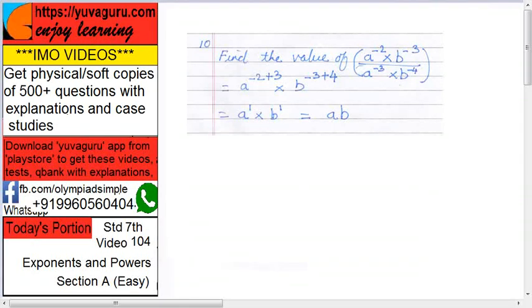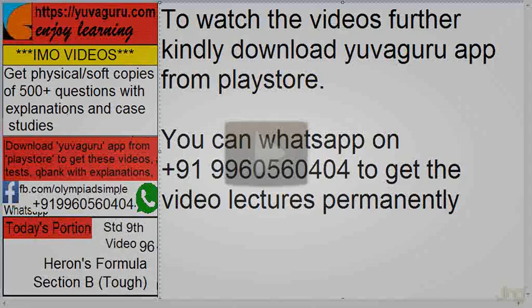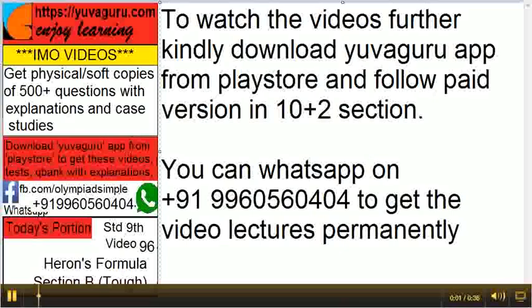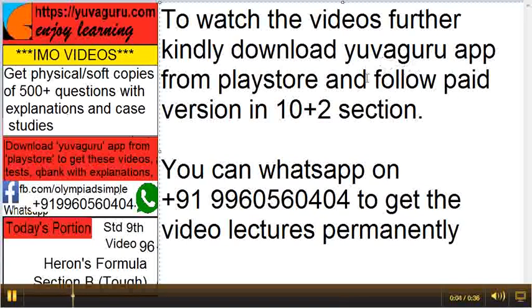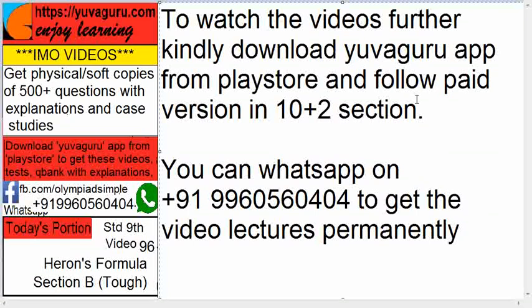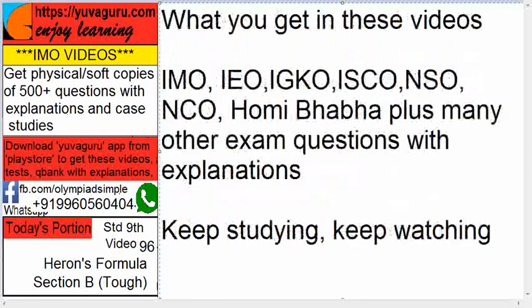Download Yuvaguru app from Play Store to get these videos, question banks and explanations directly on your mobile. To watch the videos further, kindly download Yuvaguru app from Play Store and follow the paid version in 10 plus 2 section. You can also WhatsApp on number 9960560404 to get the videos permanently on your PC and on your mobile. What you get in these videos? IMO, IEO, IGKO, ISEO, NSO, NCO, Homibaba plus many other exams questions with explanations. So keep studying, keep watching.